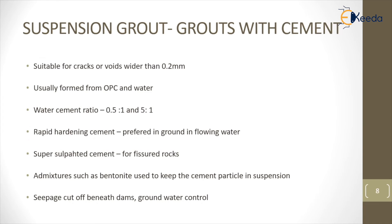Let's look at cement suspension grout. It is suitable for cracks or voids wider than 0.2 mm, and is easily formed from ordinary Portland cement and water. The water-cement ratio is 0.5 to 1. Rapid hardening cement is used in ground with flowing water, and super sulfated cement is used for fissure grouting. Admixtures like bentonite are used to keep the cement particles in suspension. Applications include external seepage cutoff beneath dams and groundwater control.